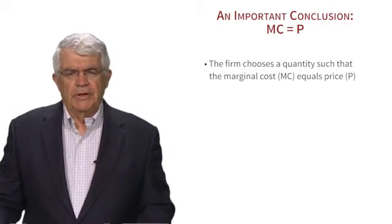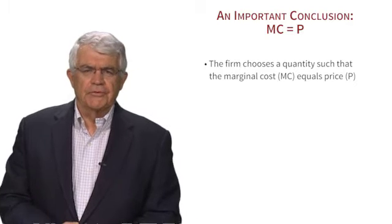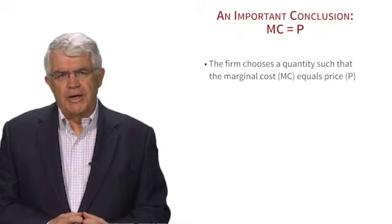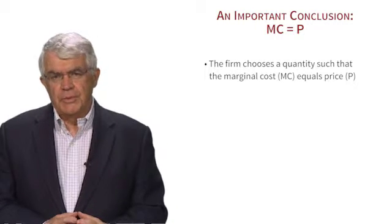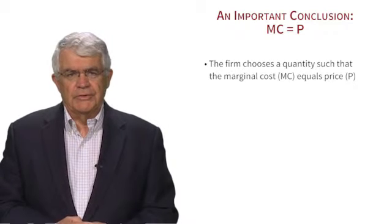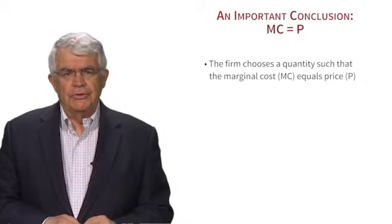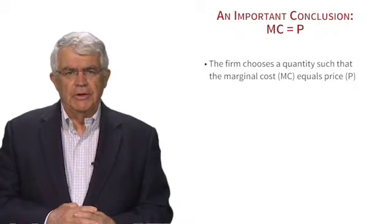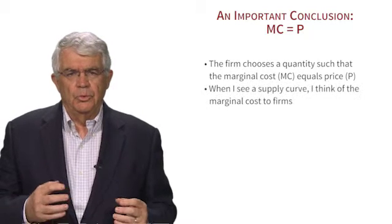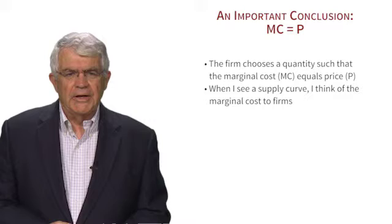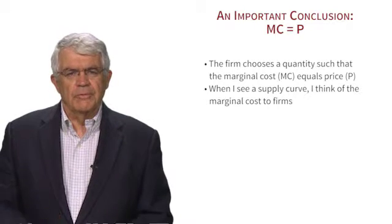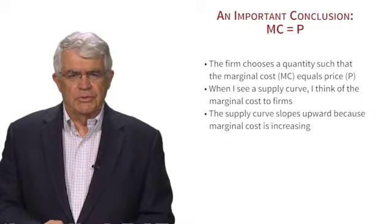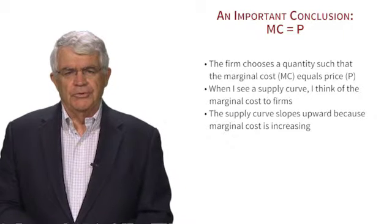Let's think about what has come out of this derivation. The decision the farmer made has been to set marginal cost equal to the price. The firm chooses a quantity such that marginal cost equals the price. When an economist sees a supply curve, we think of marginal cost. The supply curve slopes upward because marginal cost is increasing — that's the exact reason why supply curves slope upward.